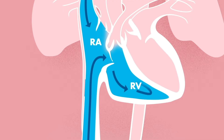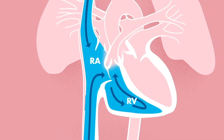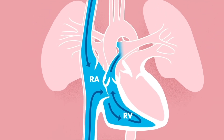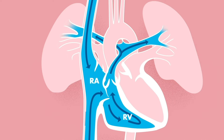From here, the blood is pushed out through the pulmonary valve into blood vessels called the pulmonary arteries. These arteries take the blood to the lungs.